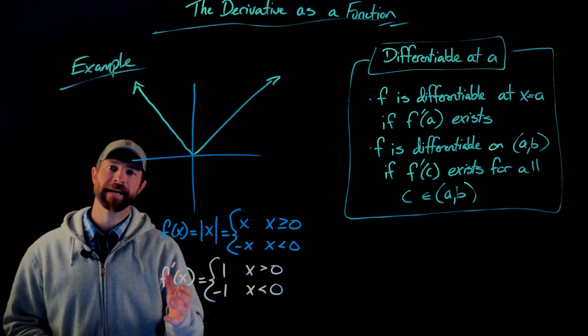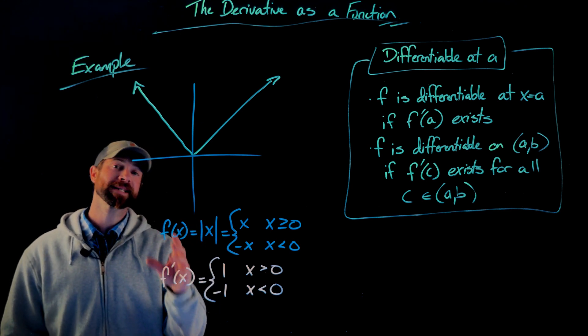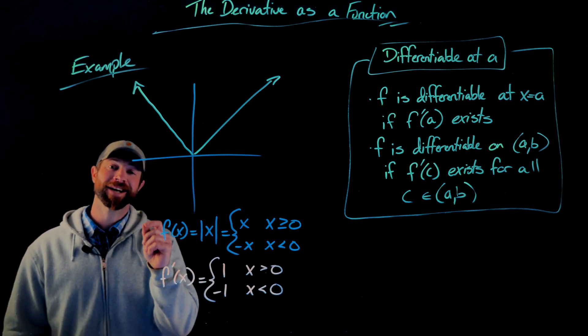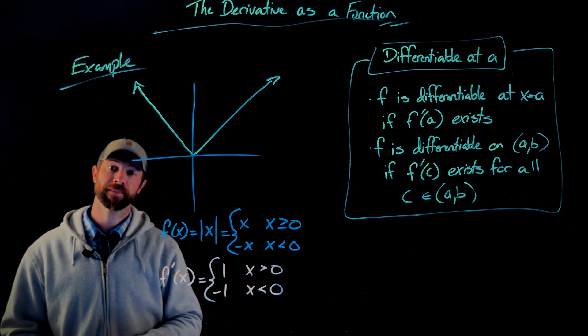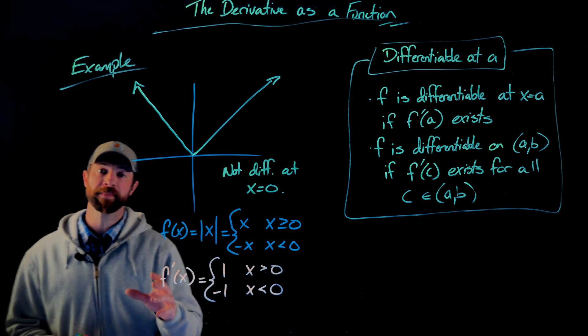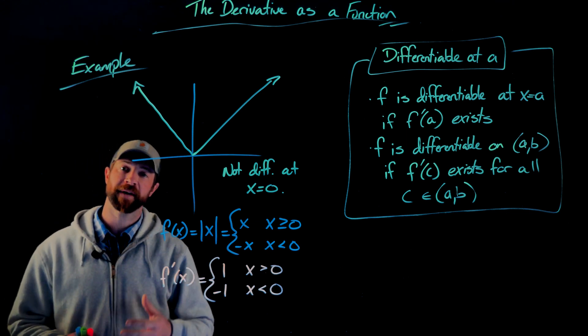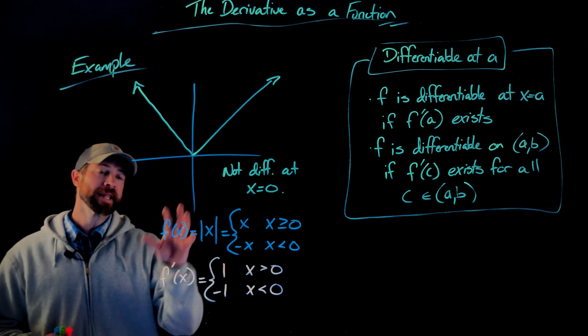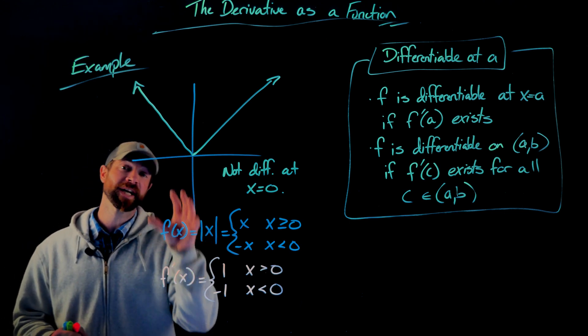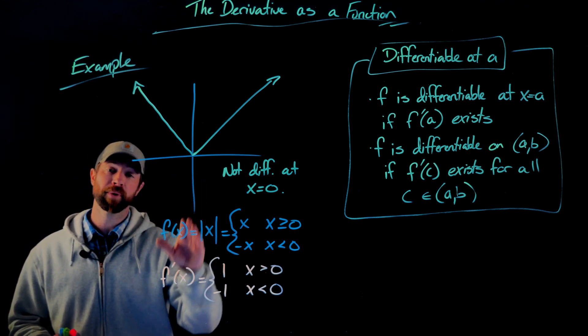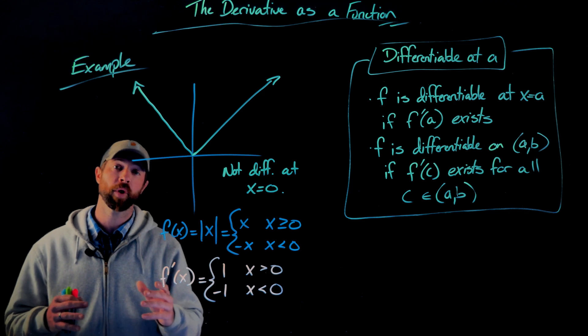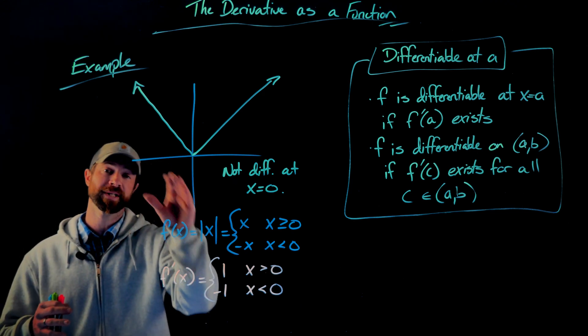In this next example, we're looking at the function, the absolute value of x. This function actually is not differentiable at zero also. The reasoning here is a little bit different than the previous example. Again, we argued previously, well, the function wasn't defined at zero, therefore it can't be differentiable there. This absolute value of x is actually a continuous function. There are no breaks in this function. The limit at any point is also the function value, as you can see here.